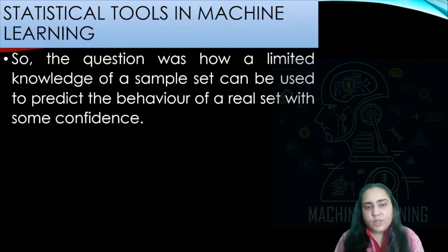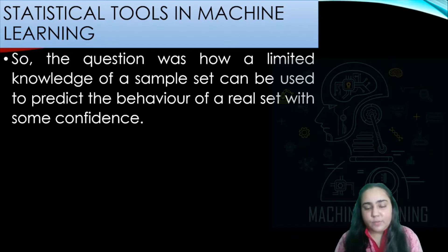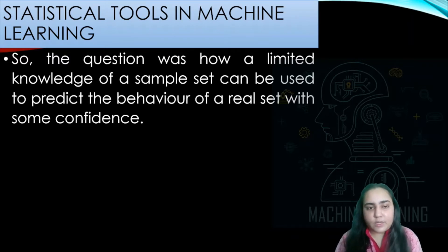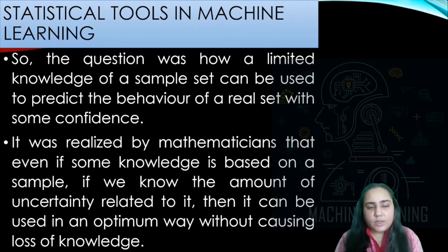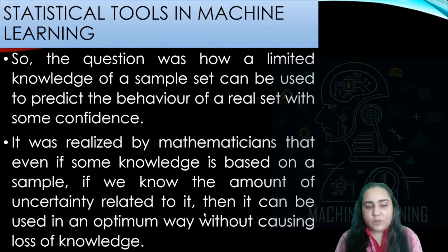So the question is: how can a limited knowledge of a sample set be used to predict the behavior of a real population with some confidence? Whenever we use a sample set to predict something about the whole population, we always need to give a percentage of confidence in our conclusion. It was realized by mathematicians that even if some knowledge is based on a sample, if we know the amount of uncertainty related to it, it can be used in an optimum way without causing loss of knowledge.